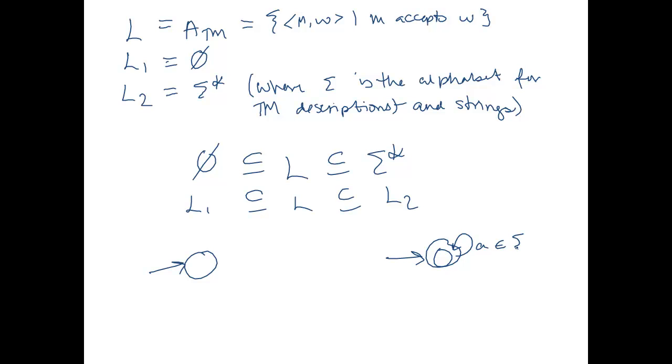So L1 and L2 are decidable, but L we know for a fact is undecidable. So it is not always the case that if L is a superset of a decidable language and a subset of another decidable language, that L must also be decidable.